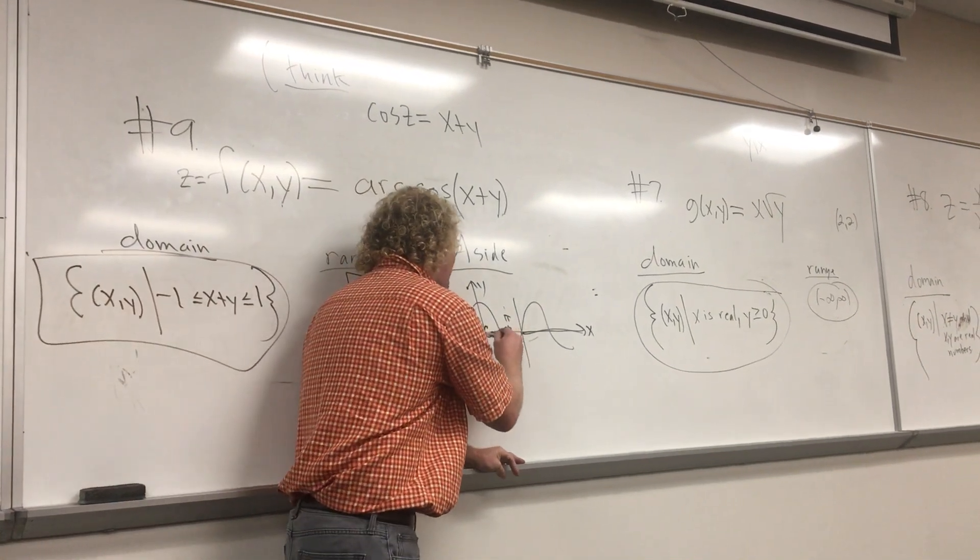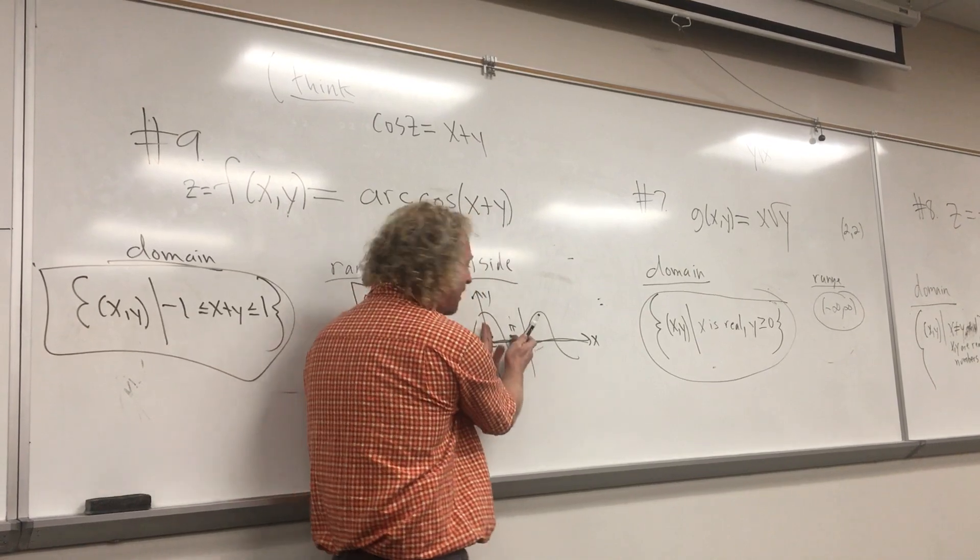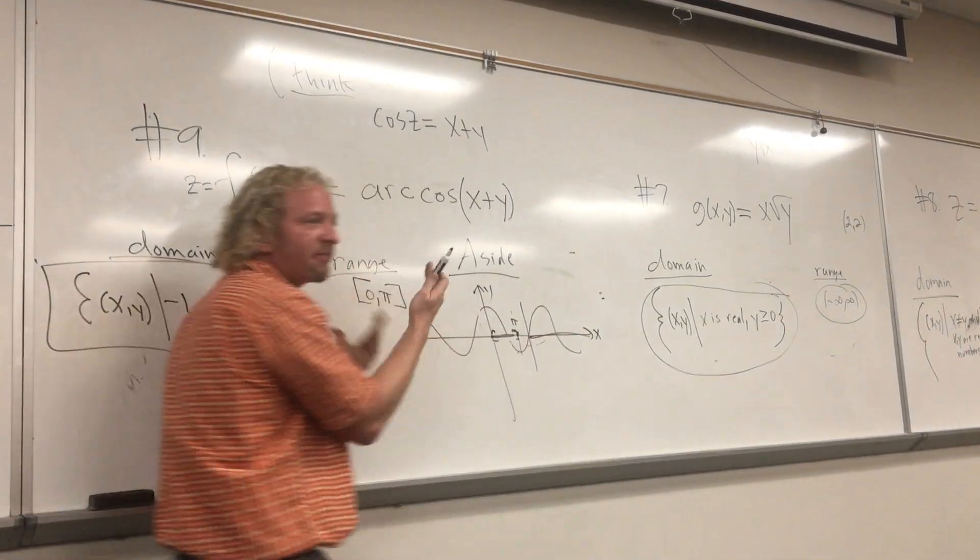So how do I memorize it? I just know what the graph looks like and I think, where would it be one to one? Where is it going to have an inverse? Right there. Oh, that's going to be the range of the inverse. There's two holes. Now let's go.